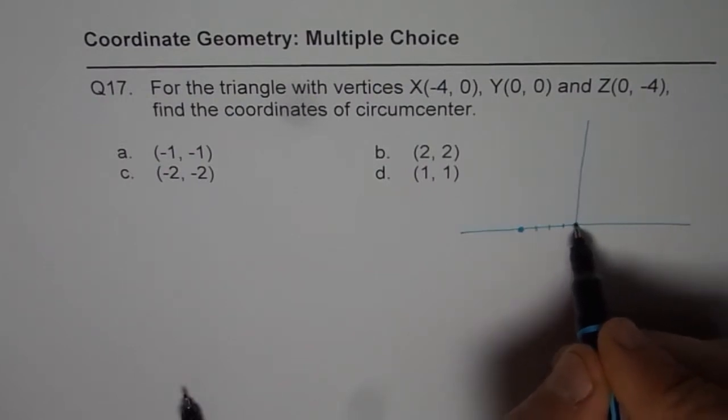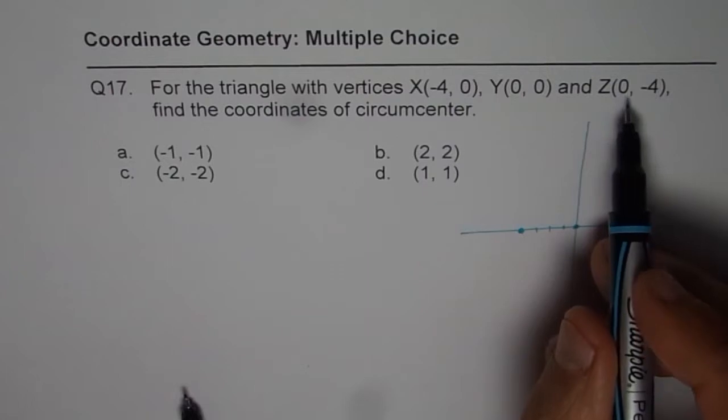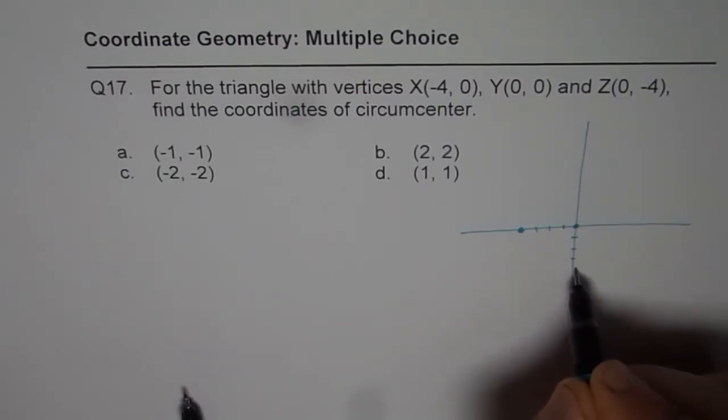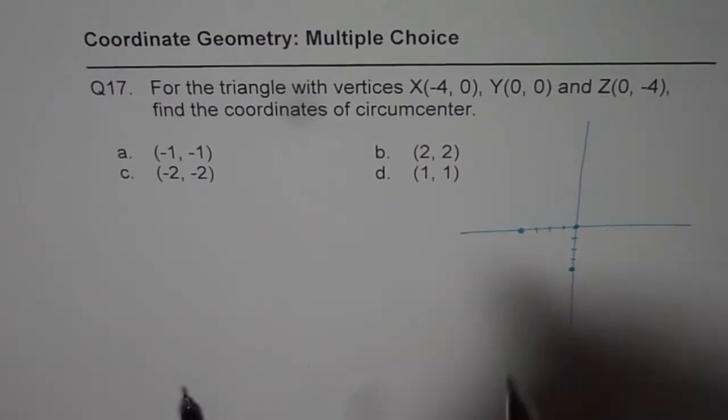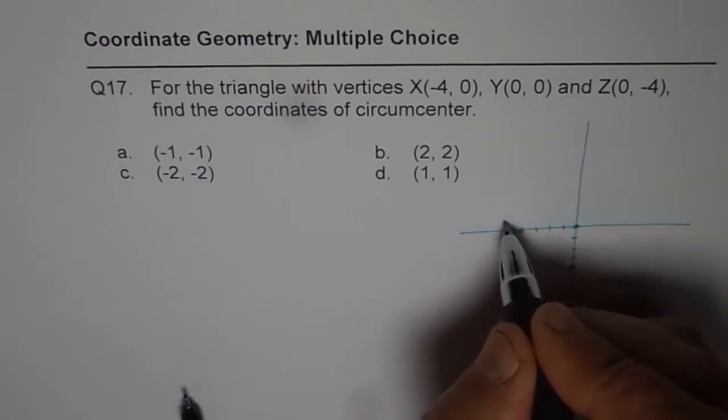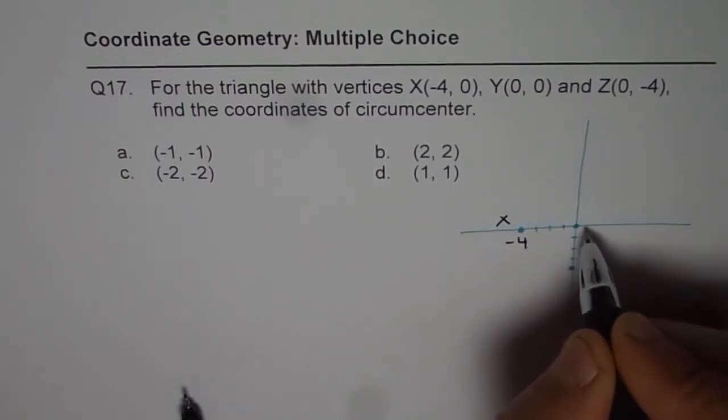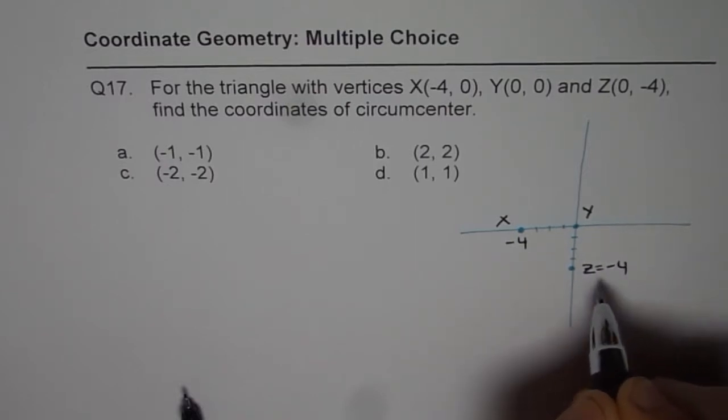Y is (0, 0), and then we have Z as (0, -4), so that is 1, 2, 3, 4, so that is Z for us. So these points are given to us. So we have X, which is at (-4, 0), then we have Y, which is at origin, and Z is at (0, -4), so this is at minus 4.